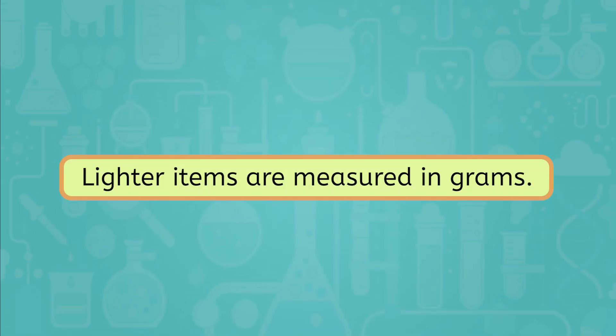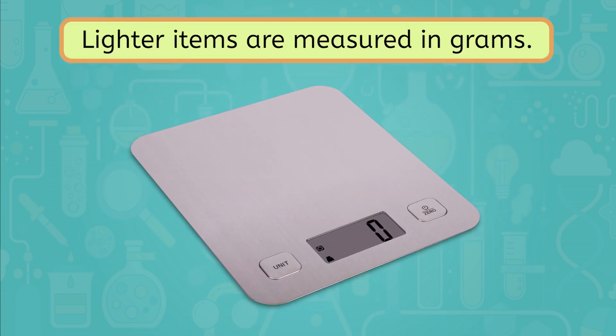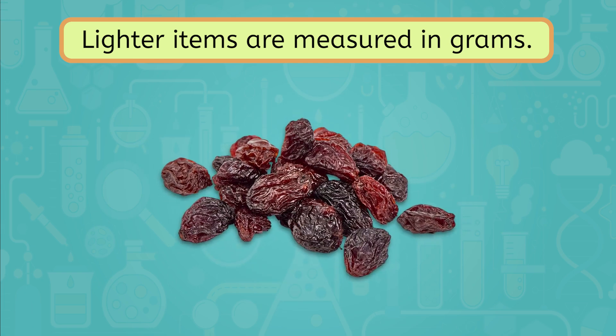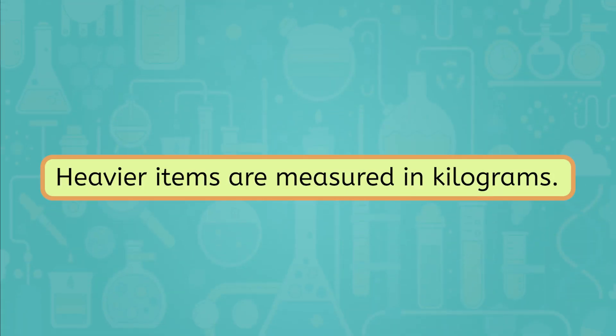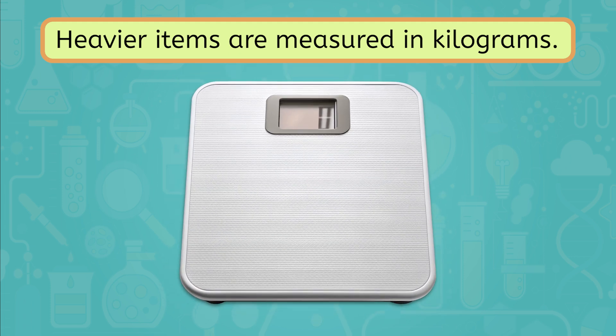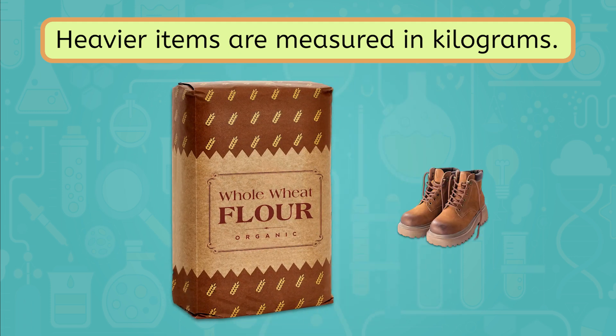Lighter items are measured in grams. If you have a food scale that measures in grams, it's best to measure small, lighter items like raisins or an apple. Heavier items are measured in kilograms. If you only have a body scale that measures in kilograms, you'll want to pick heavier items like a bag of flour or a pair of shoes. Remember, we want to use the right tool for the job. Measuring a raisin with a bathroom scale probably won't be very accurate, and weighing boots on a food scale might be too heavy.